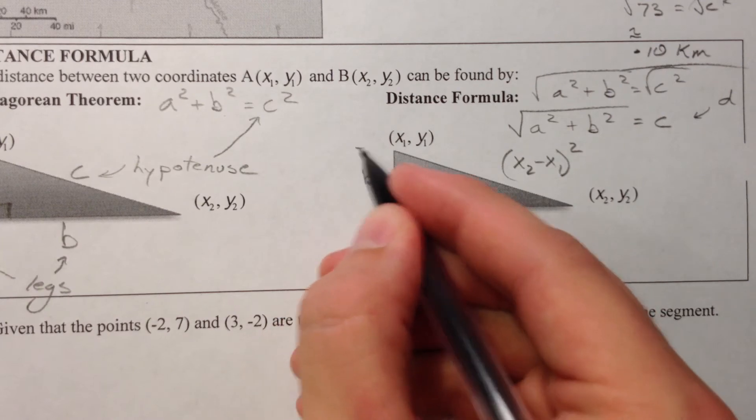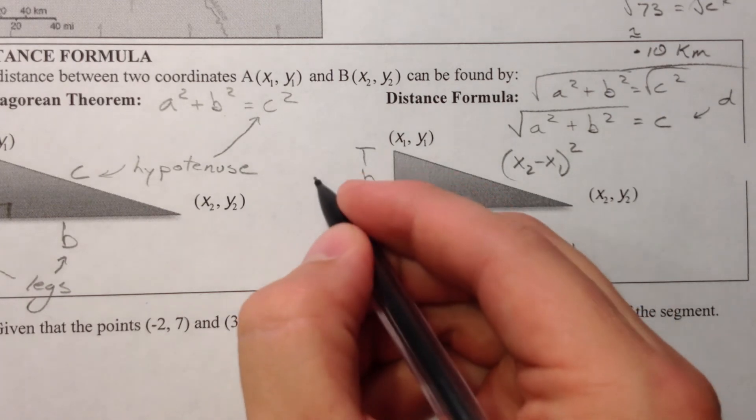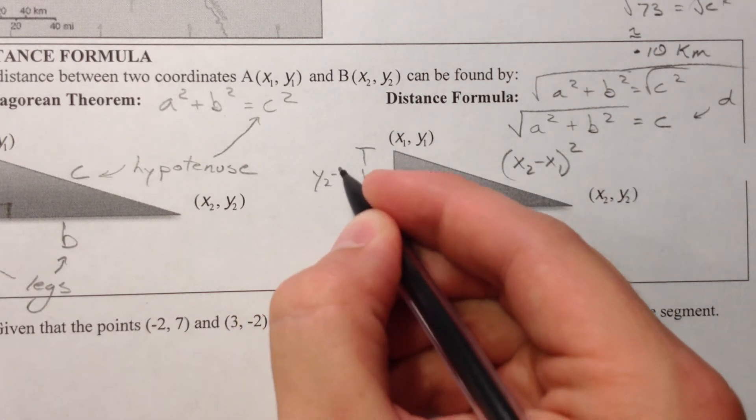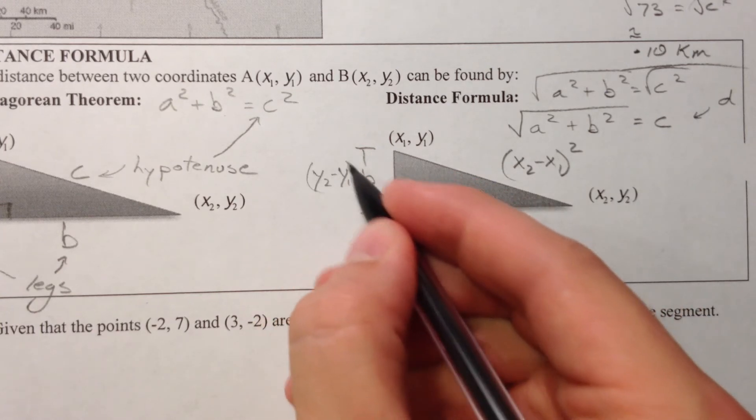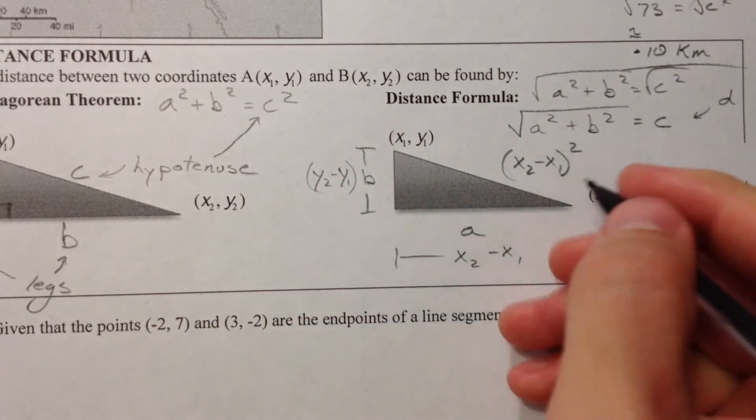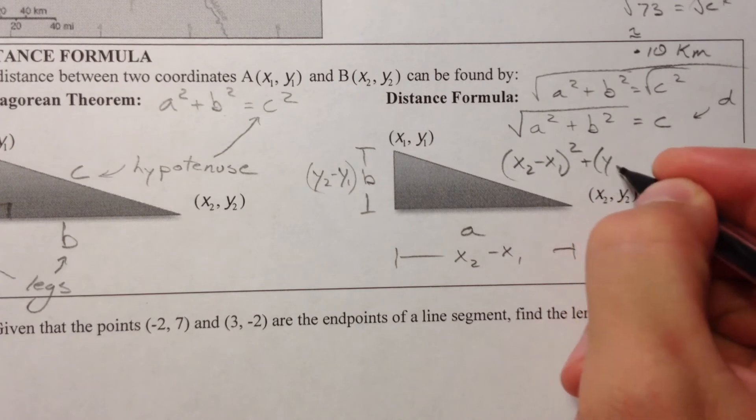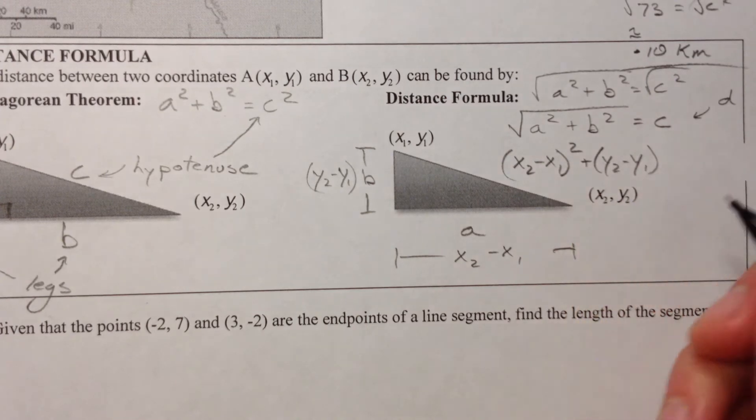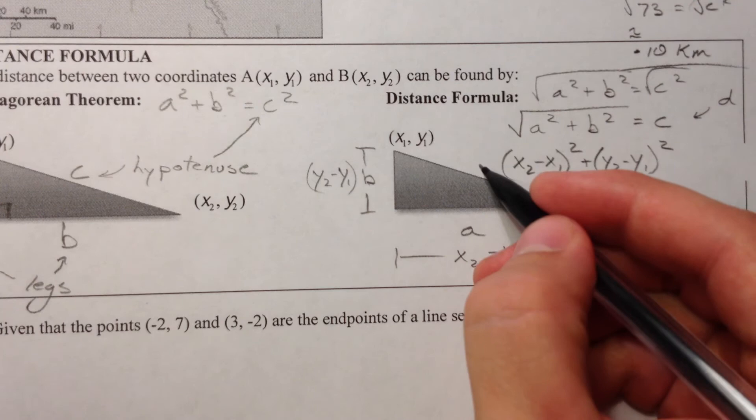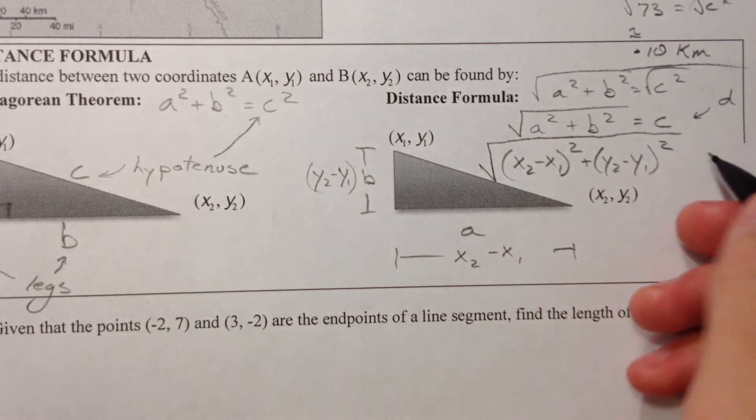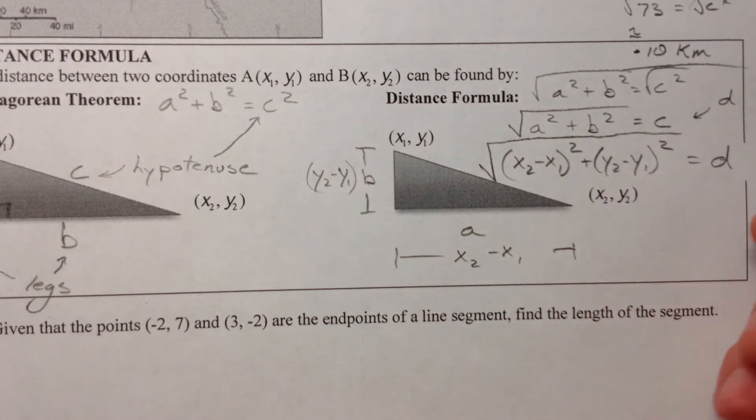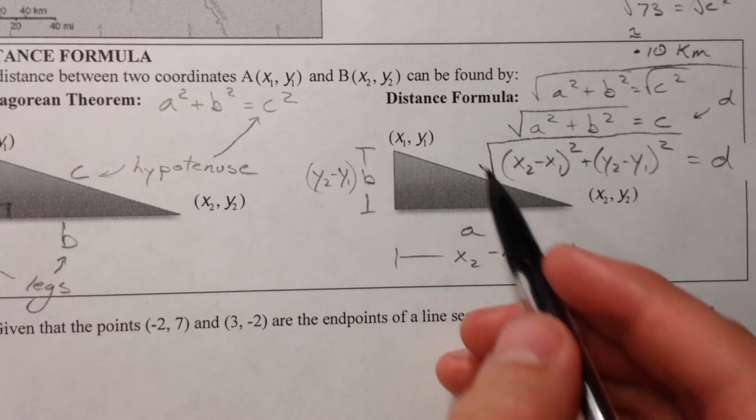And then you're going to do the same thing with the y's, y2 minus y1. And again, it doesn't matter because it's going to be squared. It doesn't matter what order you do it in. Because when you square something, it makes it positive.